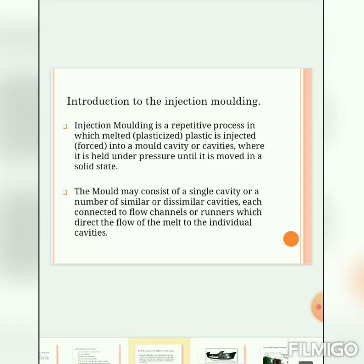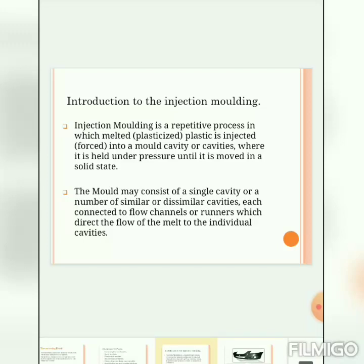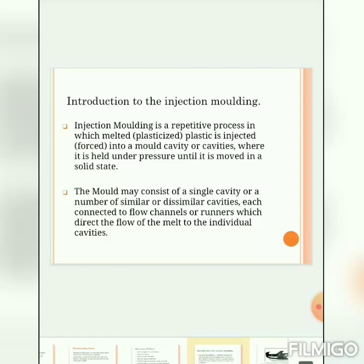Today we are discussing about the most important part of plastic product design — how plastic components are to be manufactured. There are different types of manufacturing methods such as injection molding, blow molding, vacuum forming, rotational molding, and 3D printing. For critical components and higher quality plastic products, we prefer injection molding. Let's see the detailed introduction to injection molding.